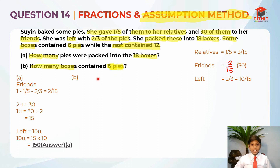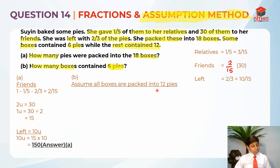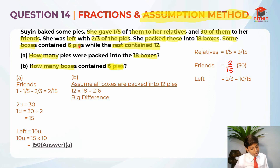Do you remember the step process? We assume 12 pies per box. So we take 12 times 18 boxes to find how many pies there are: 12 times 18 is 216. Is 216 the same as 150? No, it's way more than 150. So what we do now is find the big difference: 216 minus 150 gives us 66.